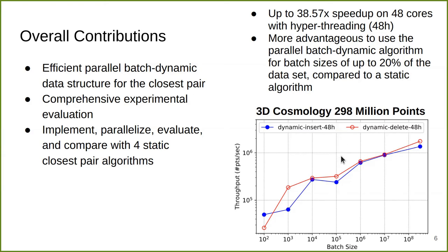The plot shows throughput — meaning points processed per second for updates — versus batch size. We see that with higher batch size, the throughput increases, and it can be as high as more than one million points per second. The dataset itself is also very large, containing 300 million points; it is a dataset in 3D cosmology.